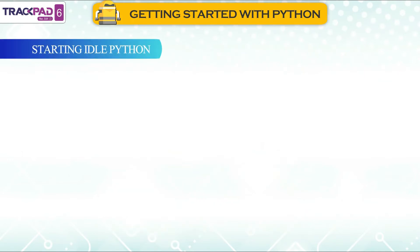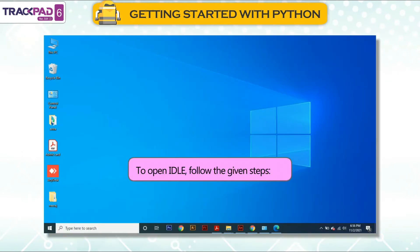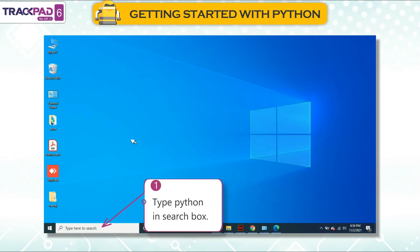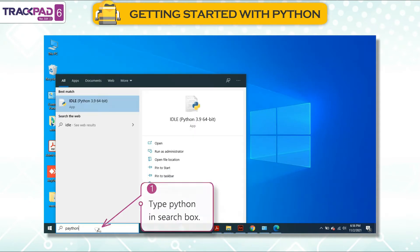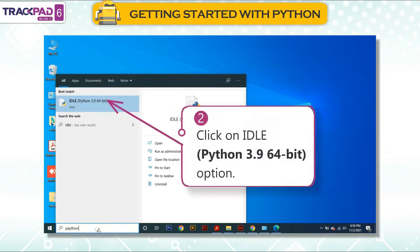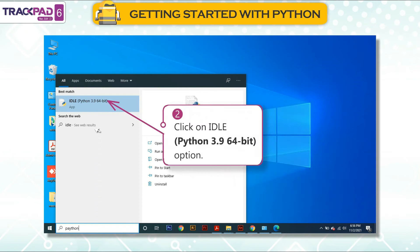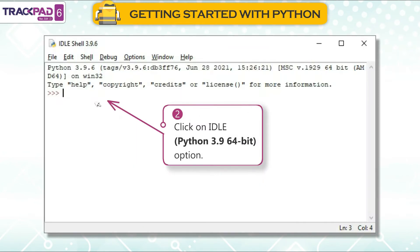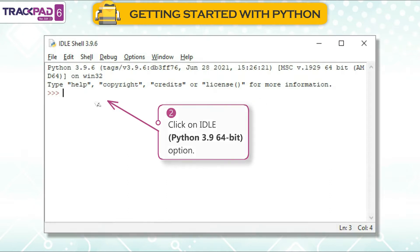Starting IDLE Python: To open IDLE, follow the given steps. First, type Python in the search box. Second, click on the IDLE Python 3.9 64-bit option.